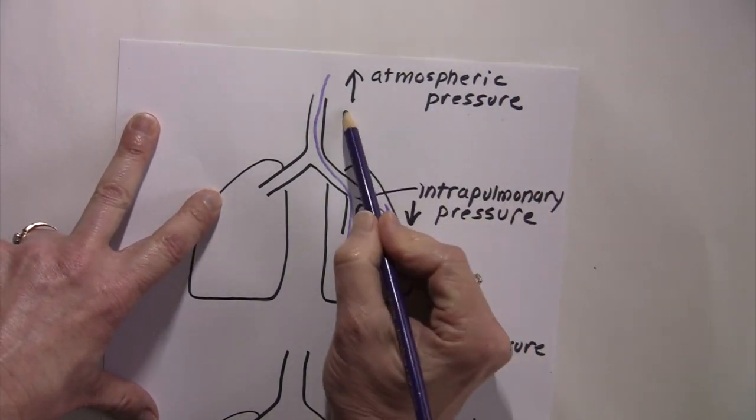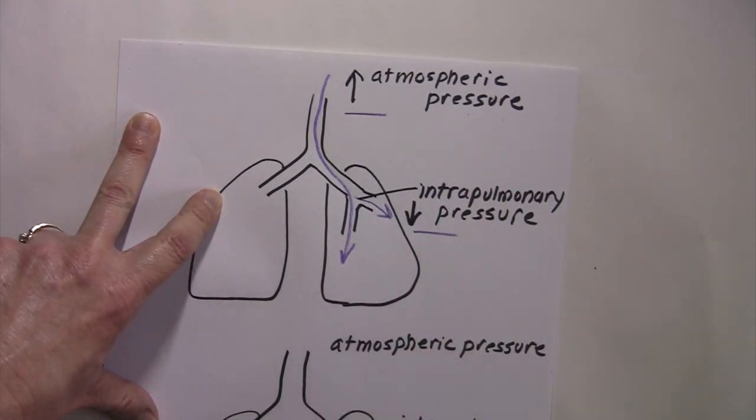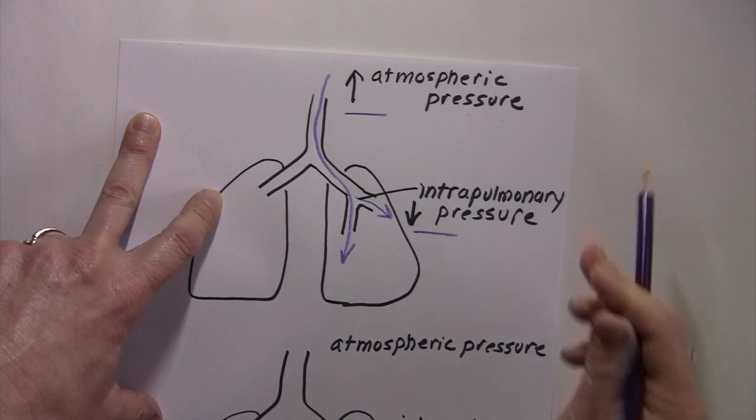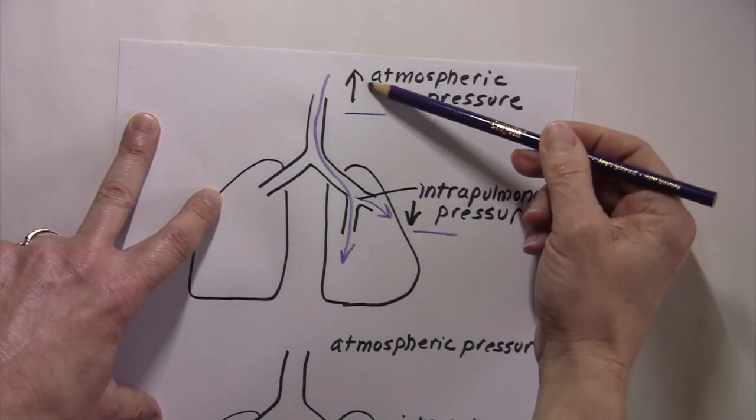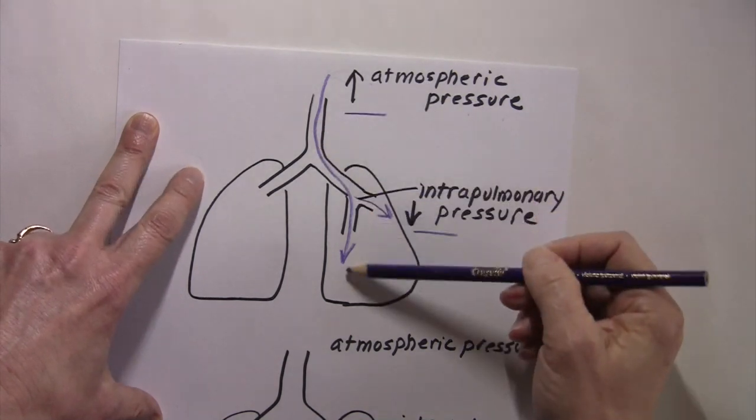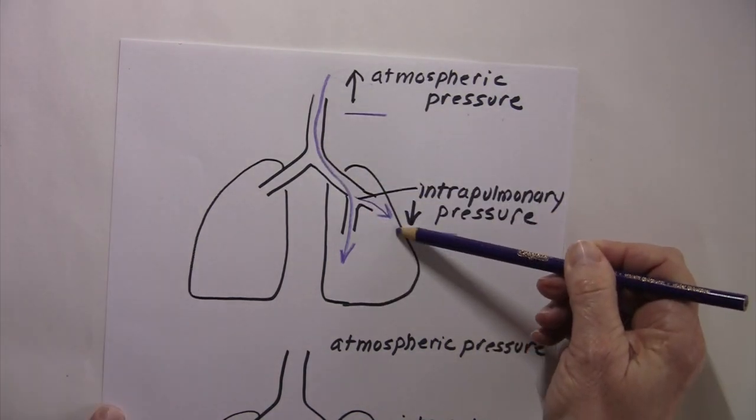Inhalation depends on this pressure gradient. In order to have inhalation, you must have a pressure gradient. Pressure gradients move gases. Gas will move from the area of high pressure outside of our body into the area of low pressure inside of our lungs.